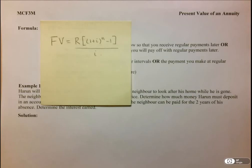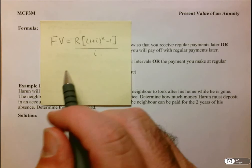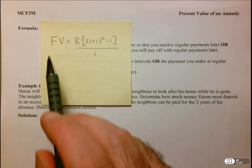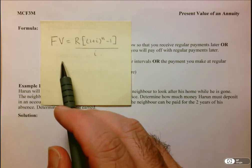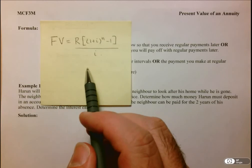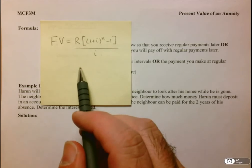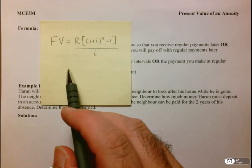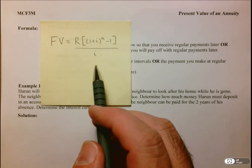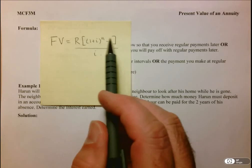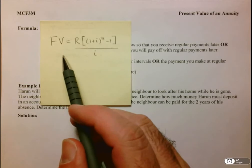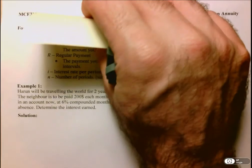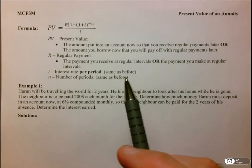We're going to take a look at the last topic for this unit, which is a second type of annuity. Before we do that, let's review our first type of annuity, which was a future value. That formula gave you the future value when you deposit regular amounts into an account over a certain period of time — R represents your regular payments, and the formula tells you how much money you'll have at the end, including the interest.